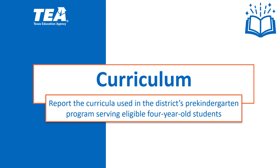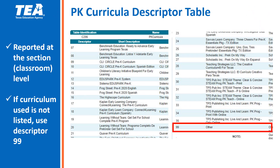Let's start with the curriculum component. This is where the LEA will report the curricula used in the district's pre-kindergarten program serving eligible 4-year-old students. Curriculum is reported at the section or classroom level, and a curriculum descriptor must be entered for each section. Curricula on the SBOE instructional materials list have their own code. If a curriculum is not on this list, the appropriate code is descriptor 99 for 'Other.' The requirement for curriculum to align with the current Texas pre-kindergarten guidelines still applies, and it is highly recommended that LEAs keep documentation on file to confirm alignment when reporting descriptor 99.